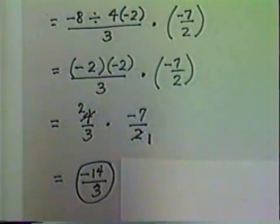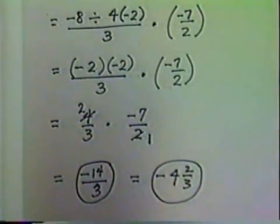And there's the final answer. If you like mixed number form better, you can divide the 3 into 14 and write the answer as negative 4 and 2 thirds.